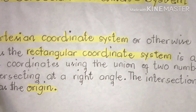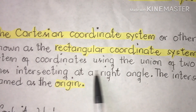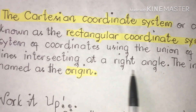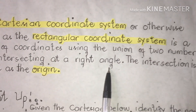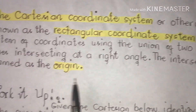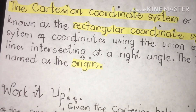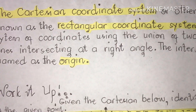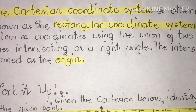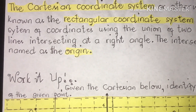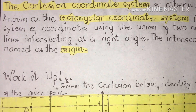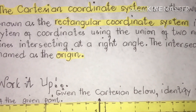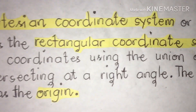The rectangular coordinate system is a system of coordinates using the union of two number lines intersecting at a right angle. We are going to identify the names of the given points on the Cartesian plane below. We are going to concentrate on how the Cartesian coordinate system works.